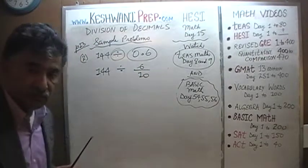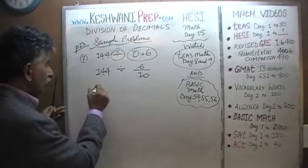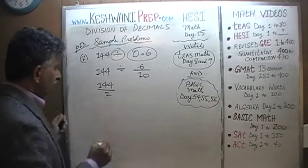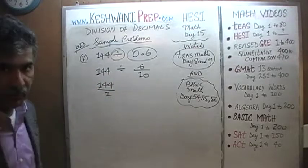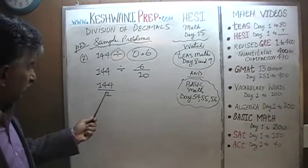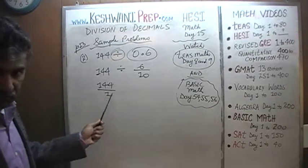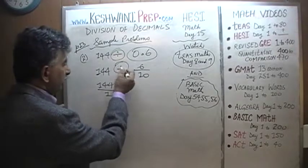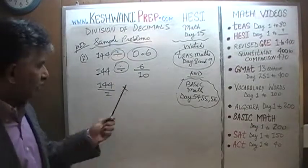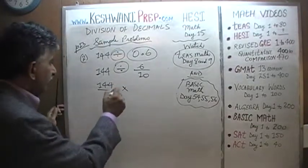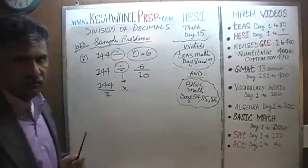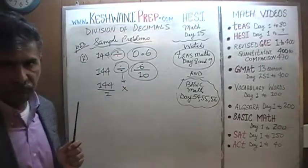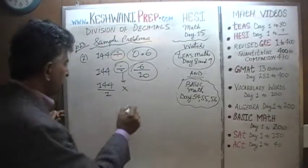Let's convert these into fractions so it's easy to deal with. Division becomes multiplication, and as soon as we convert the division sign into a multiplication sign, we must take the reciprocal of the second fraction. 6 over 10 becomes 10 over 6.